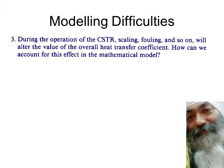Even if we have modeled the CSTR perfectly, the CSTR is not going to remain the same. It's going to develop scale; fouling will take place and the overall heat transfer coefficient will not remain the same. Aging is going to occur, quality and efficiency will deteriorate with time, and these changes also need to be reflected in the mathematical model.